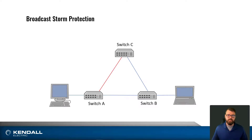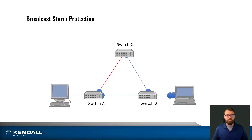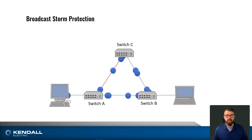If we were to send information from switch A, it's going to forward that information to switch C and switch B. Switch B will then forward that information to switch C, and switch C will forward that information back to switch A, which creates this loop and propagates broadcast traffic across our network. This can quickly bring down your industrial control networks and cause unplanned downtime. That is why we recommend using Stratix 2000 switches with broadcast storm protection.